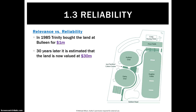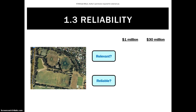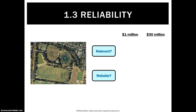Looking at relevance and reliability — we looked at relevance last time. In 1985, Trinity bought the land for our sports grounds out of Bullion for a million dollars. Let's say today it's worth about 30 million dollars. The question now is: how should we value it? Should we list it at a million dollars?